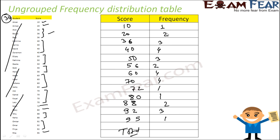Score 92 is 3 times, and score 95 is 1. If you add all the frequencies — 1, 2, 3, 4, and so on — you get the total number of students. This is called an ungrouped frequency distribution table, or simply a frequency distribution table, because we have introduced a new term called frequency.